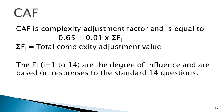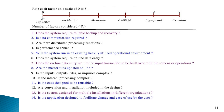Now I am going to calculate the CAF — Complexity Adjustment Factor. It equals the equation: 0.65 + 0.01 × ΣFi, where Fi is the total complexity adjustment value. These Fi values are the degree of influence and are based on responses to 14 standard questions. The response to each question is scored on a scale of 0 to 5: 0 means no influence, 1 is incidental, 2 is moderate, 3 is average, 4 is significant, and 5 is essential.